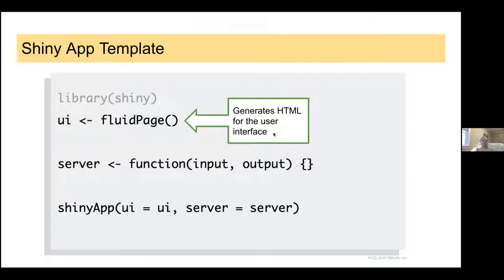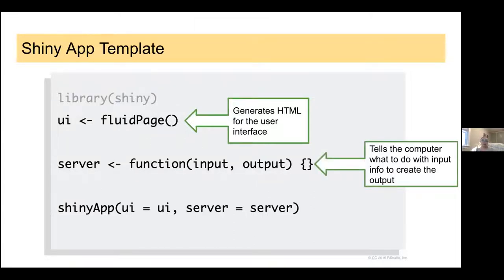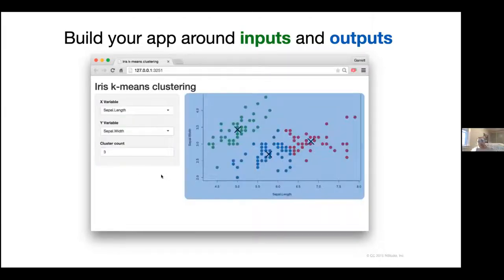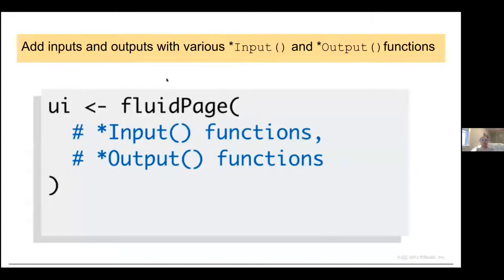The UI generates the HTML for the user interface and the server functions are going to tell your computer what to do with the input information that your user gives to create some sort of output, like a plot or a table. The idea here is that we're going to build our apps around inputs and outputs. We have input functions and output functions that make the plots. We can add various inputs and outputs to our user interface with these input and output functions.